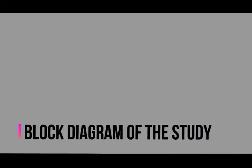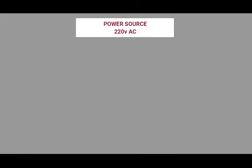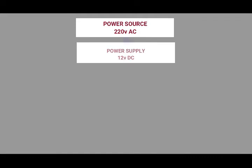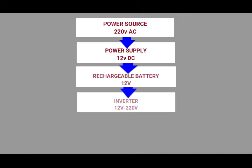This black diagram shows the flow of connection from the source to load. From the power source of 220 volts alternating current to a power supply of 12 volts direct current, to the rechargeable battery of 12 volts, and to the inverter — 12 volts for the mosquito trap and 220 volts for the LED cube.